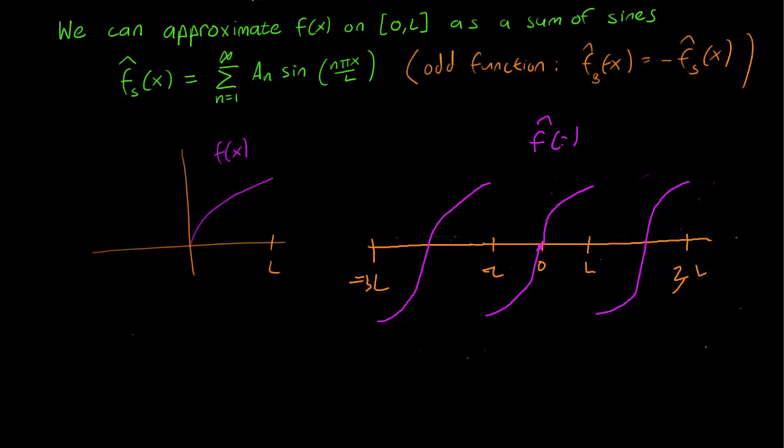Think about what happens at the jump discontinuities, and the behavior is exactly the same as the full Fourier series. We simply take the mean of the left end and the right end.